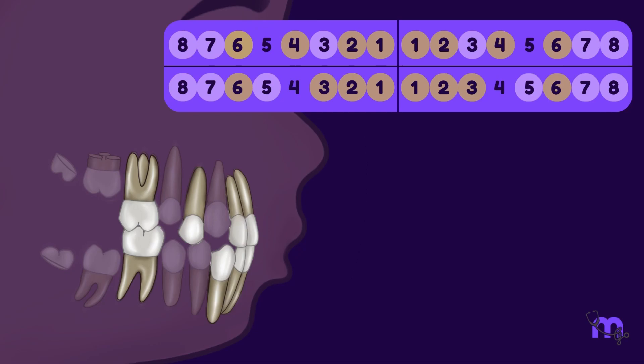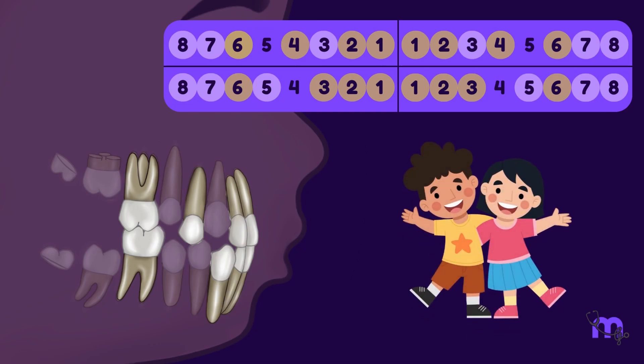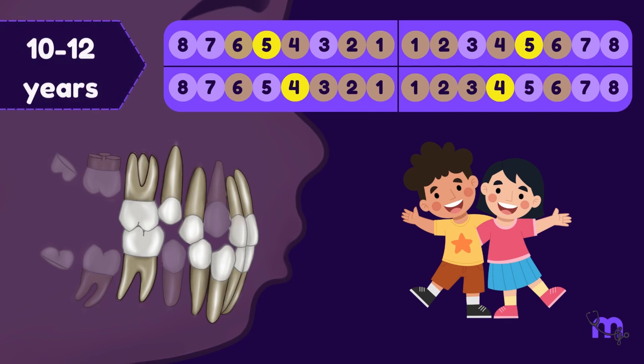Teeth then form partnerships in eruption, much like friendships that shape one's journey. The maxillary second premolars and mandibular first premolar emerge hand-in-hand at about 10-12 years.